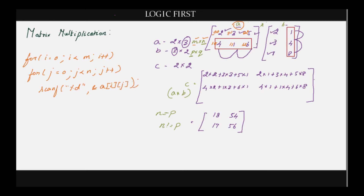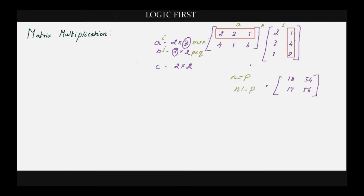By doing so you will be able to scan all the elements of the first matrix. Similarly you have to change the logic for scanning the second matrix by changing M to P and N to Q, and A to B. Now that we have scanned the two matrices, let's get to the main logic. We are taking one row at a time from matrix A, and for each of those rows we have to multiply by taking one column at a time from matrix B.